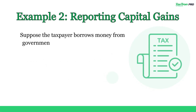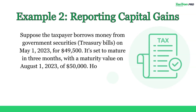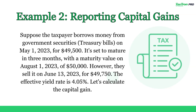Let's dive into the second scenario. Suppose the taxpayer borrows money from government securities — treasury bills — on May 1, 2023, for $49,500. It's set to mature in three months, with a maturity value on August 1, 2023, of $50,000. However, they sell it on June 13, 2023, for $49,750. The effective yield rate is 4.05%.